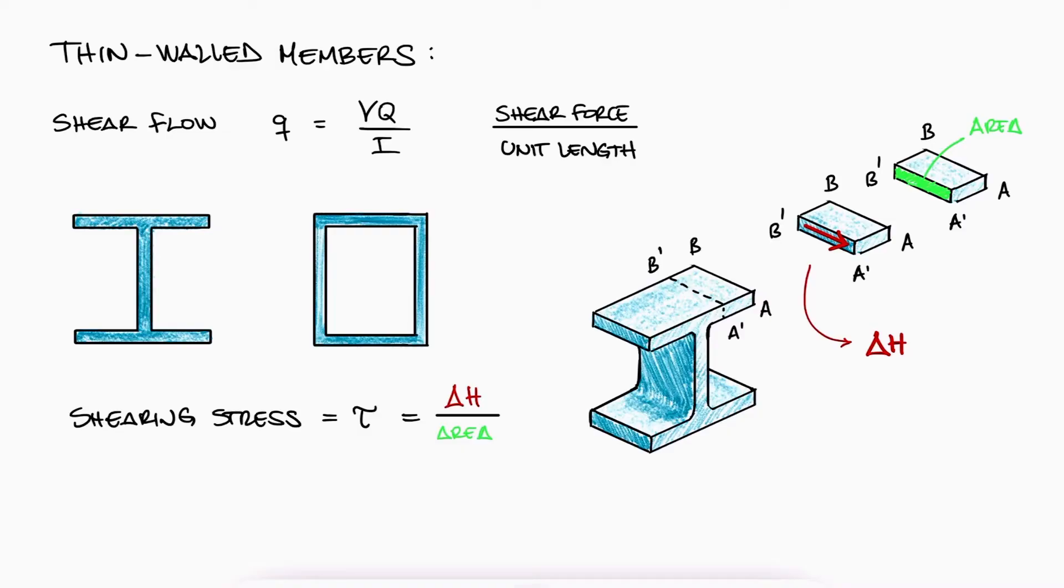For example, for an I-beam, which does meet the requirements of what we call the thin-walled member, we can take out a small section of length delta x along the x-axis, and then perform a vertical cut. Notice that this is unusual for us, since up to this point we were used to performing horizontal cuts. However, just like in any other case so far, we can see the cross-section that delta H is affecting, even if in this case it's a vertical cross-section area.